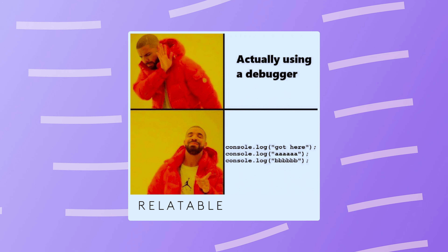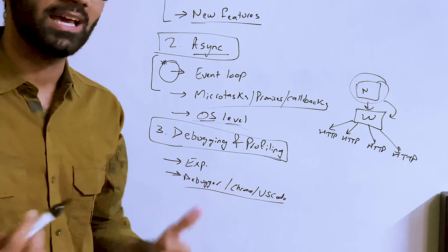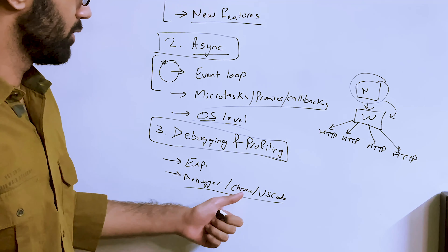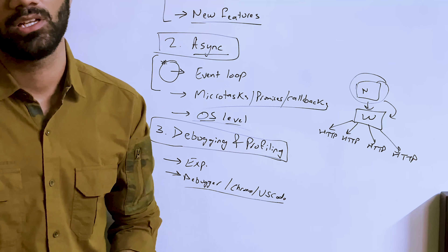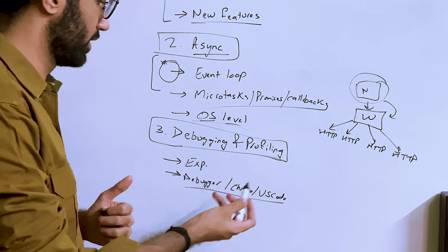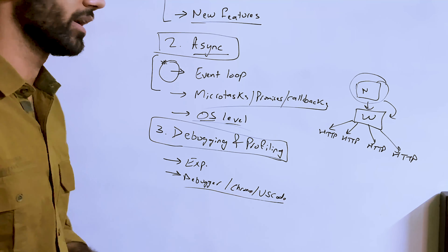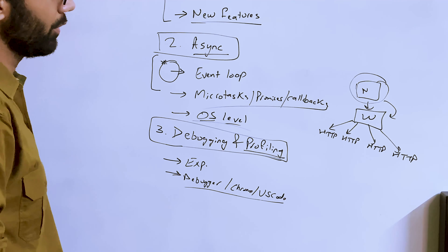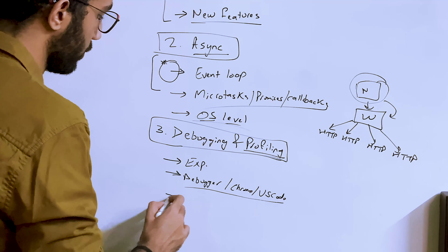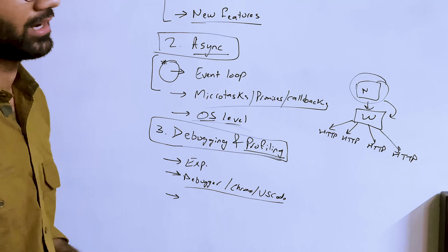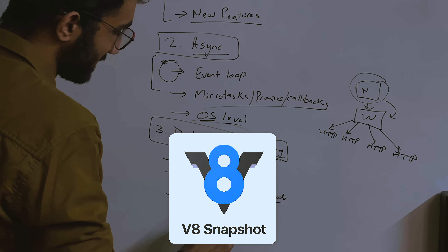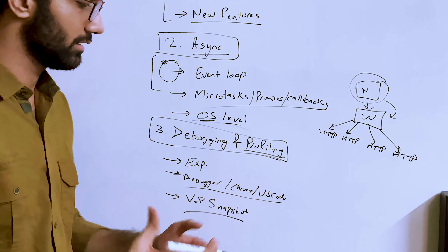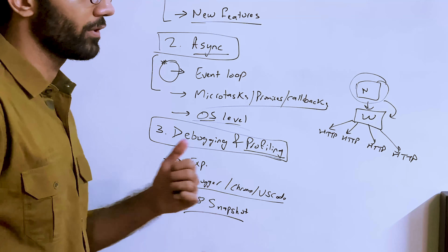Console logs are helpful, but real debugging — and even reverse engineering — cannot be done without debuggers. Profiling is also interesting and something I'm still learning. Profiling essentially means: if your code has a memory leak, how do you debug it? This involves things like V8 heap snapshots — you take a snapshot of the heap where all variables are allocated and try to figure out which part of memory is growing continuously.